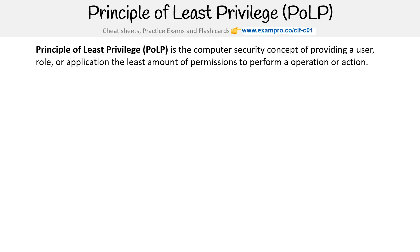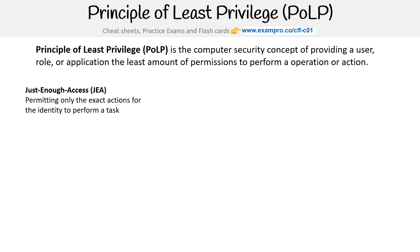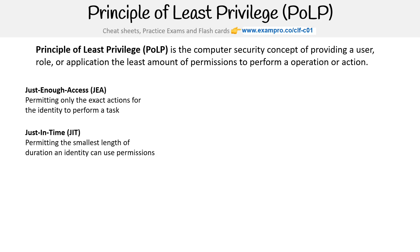Principle of Least Privilege (PULP) is the computer security concept of providing a user, role, or application the least amount of permissions to perform an operation or action. We can look at it as just enough access — JEA — permitting only the exact actions for an identity to perform a task.